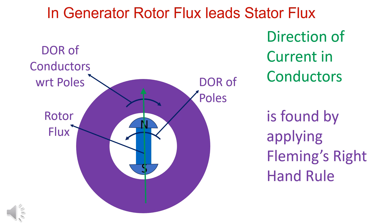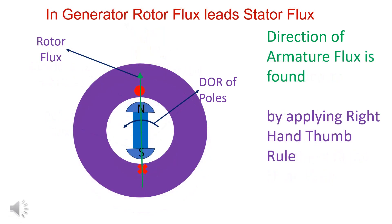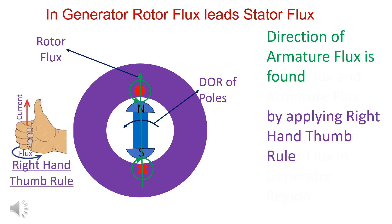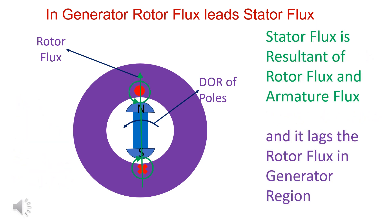In a generator region, rotor flux leads or lags the stator flux. Direction of current in conductors is found by applying Fleming's right-hand rule. By applying right-hand thumb rule, direction of armature flux is found. Stator flux is a resultant of rotor flux and armature flux. As can be seen, rotor flux leads stator flux in a generator region.